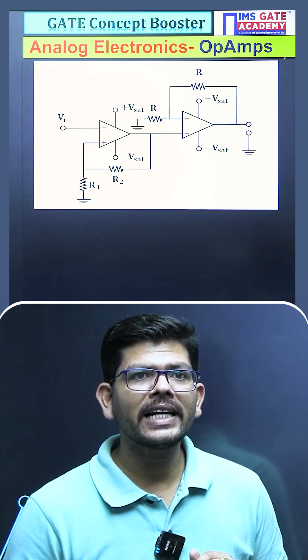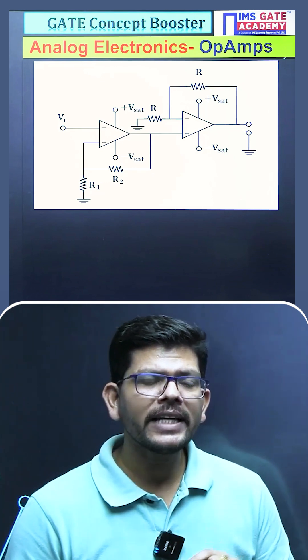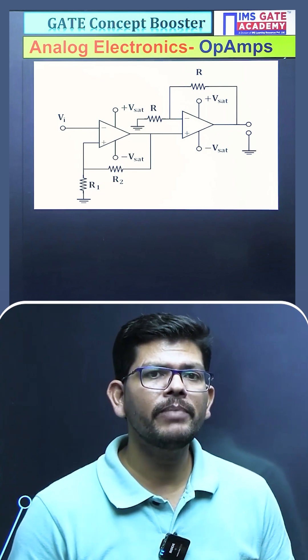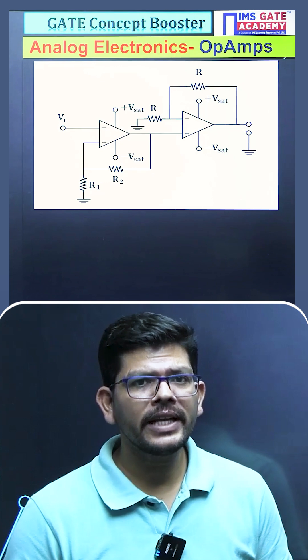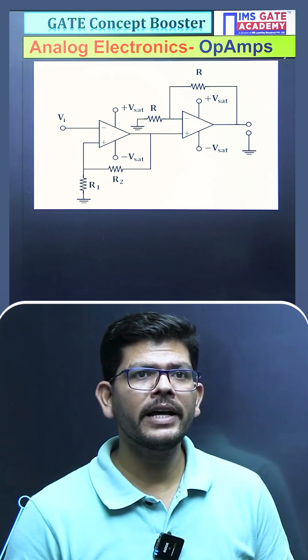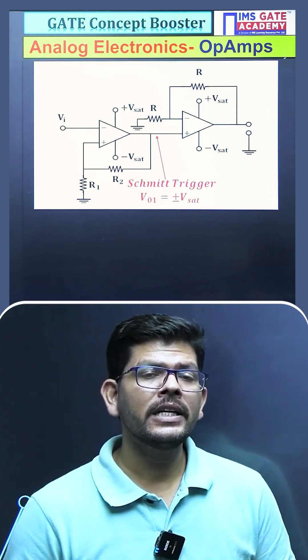The first op-amp is acting like a Schmitt trigger. For a Schmitt trigger, the output will be fluctuating in between plus/minus Vsat. Now this will act as one input for the next operational amplifier, which is acting as a non-inverting amplifier.